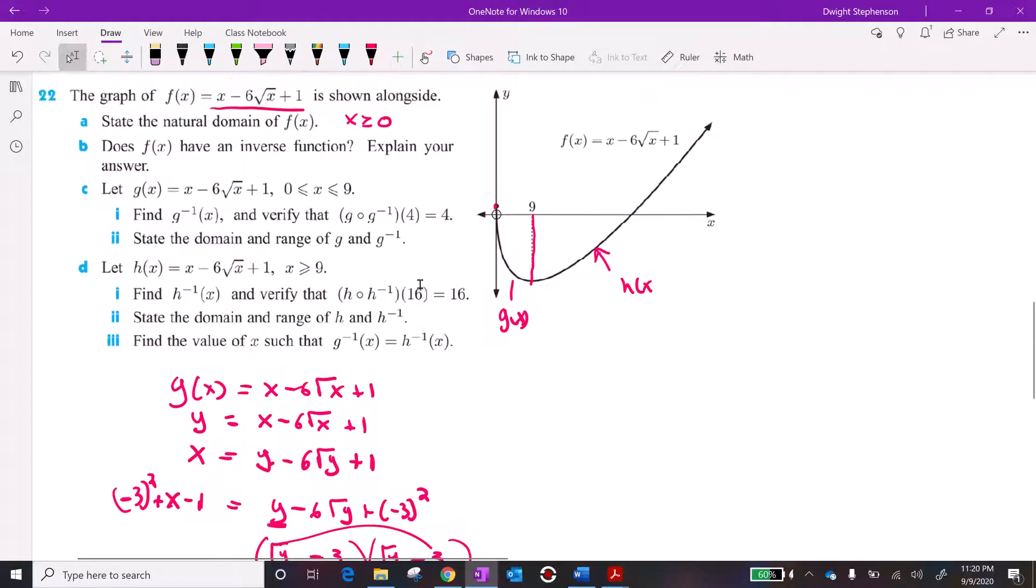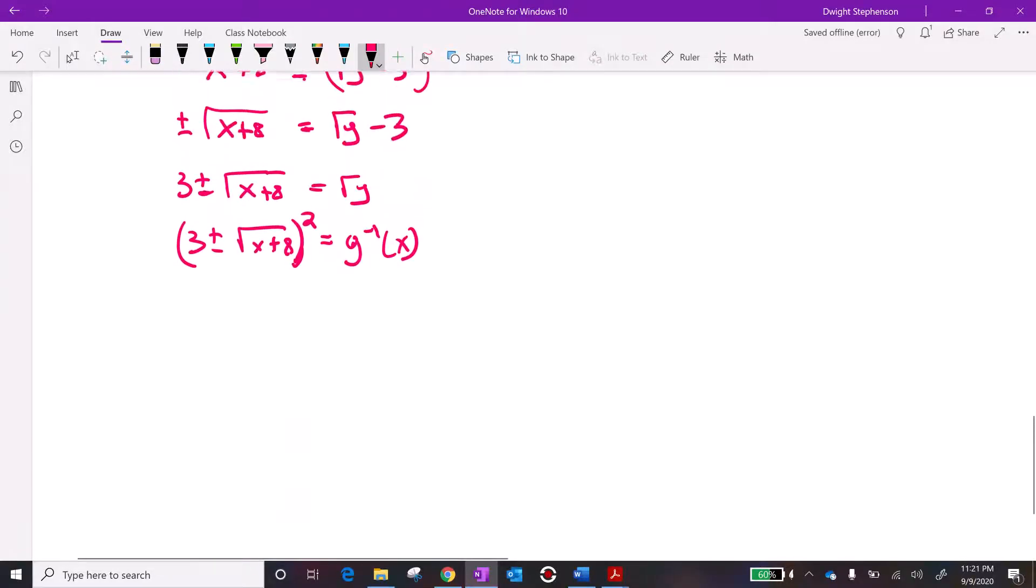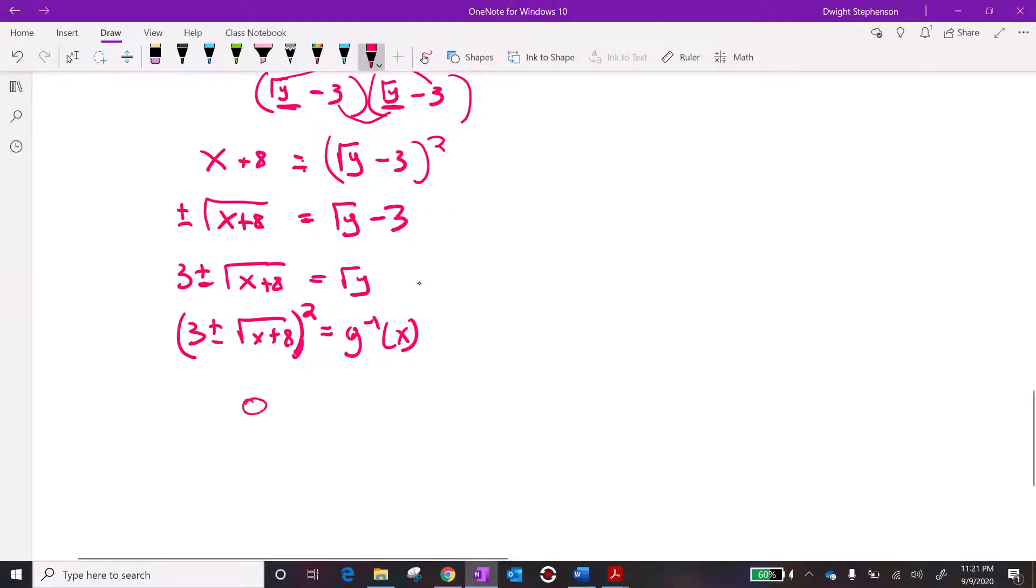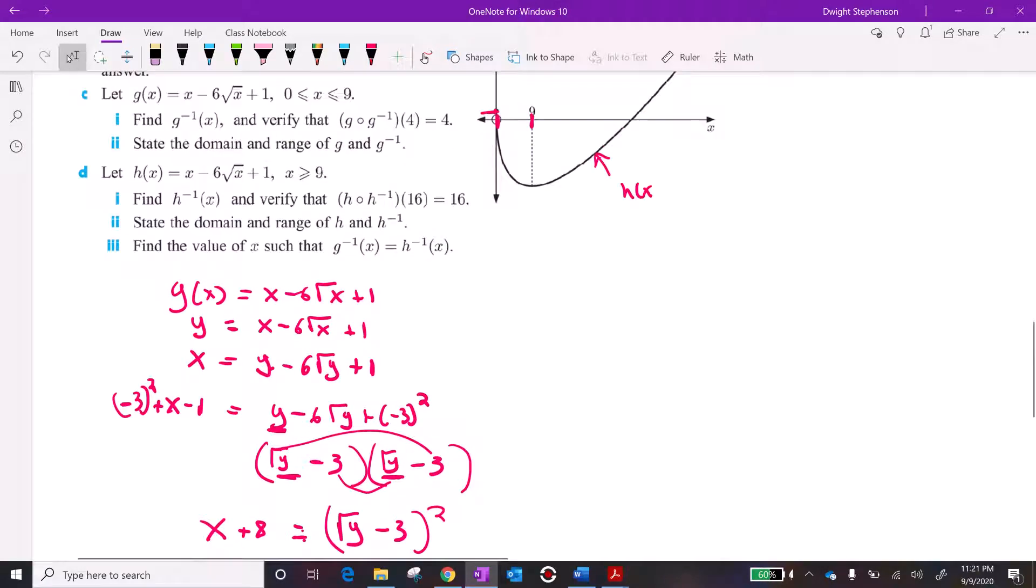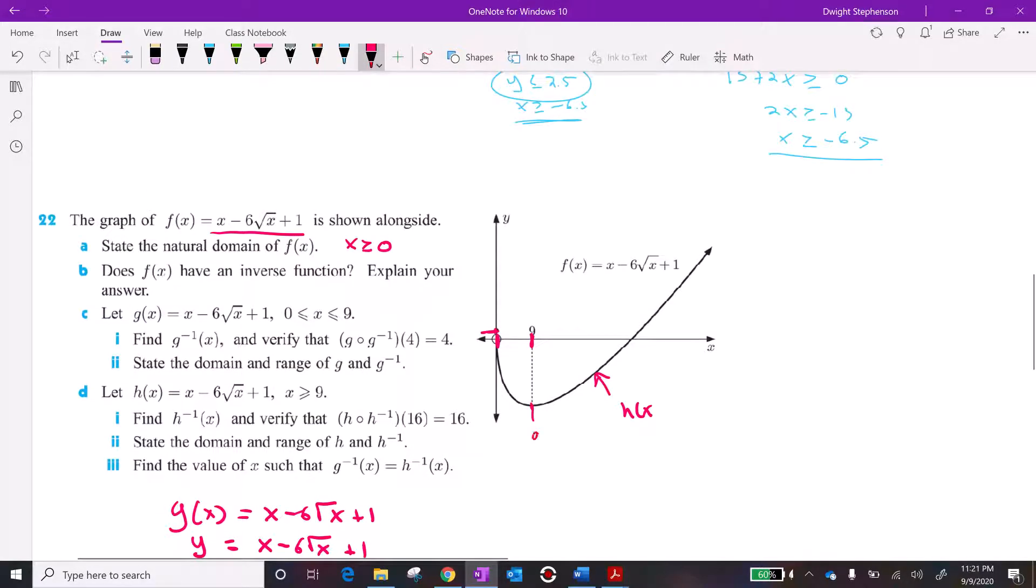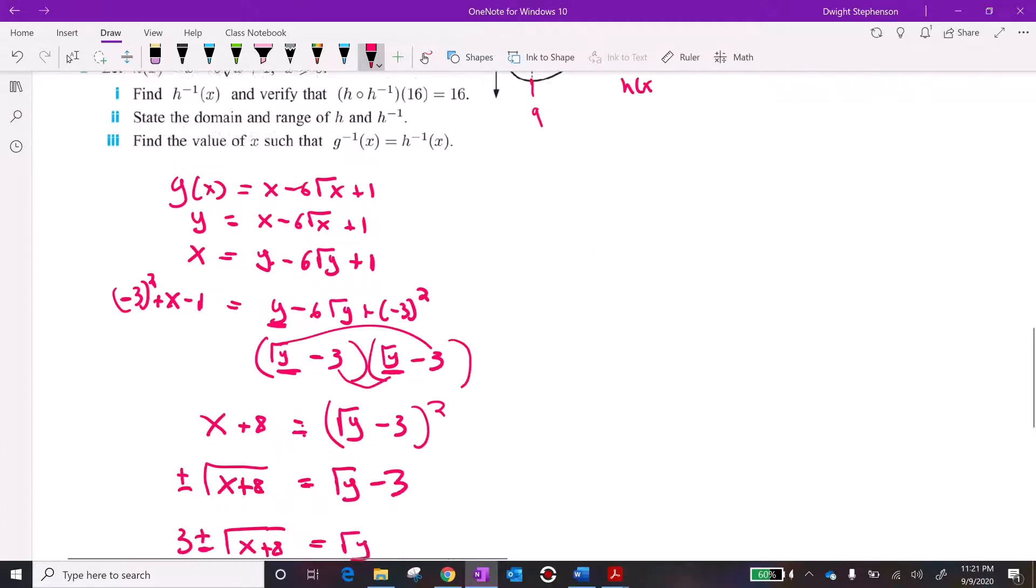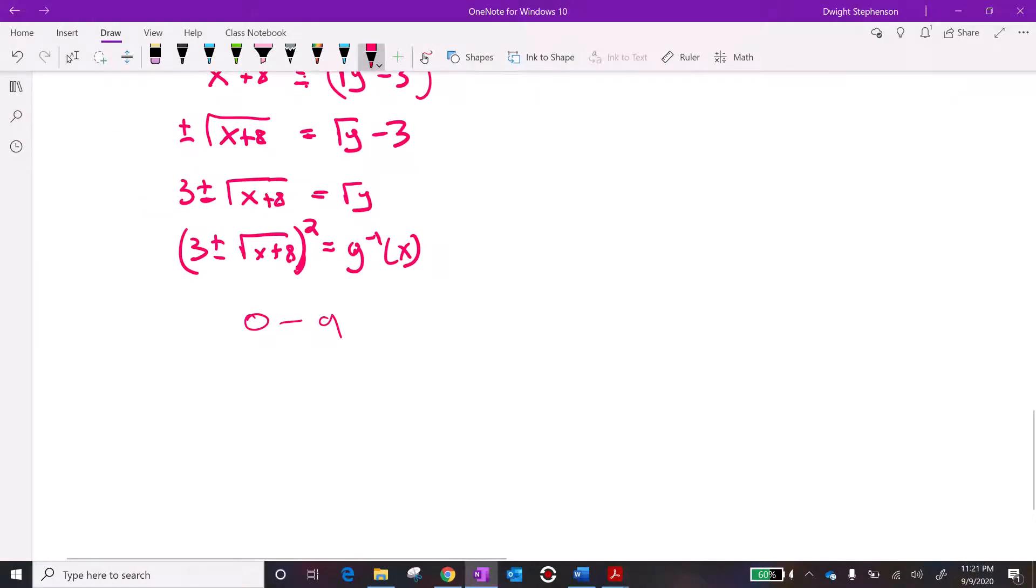Now we've got to decide do we want the plus or do we want the minus. A good way to do this is if you have the graph, you can look at the graph. Remember the domain and range switch for the graph. So the range for the inverse function should be between 0 and 9. So if I look at this, the output numbers I should be getting should be between 0 and 9. Whereas for this other piece, I would get values between 9 and up. So one of these pieces, the plus or the minus, is going to get me between 0 and 9. And the other piece is going to get me 9 and up.